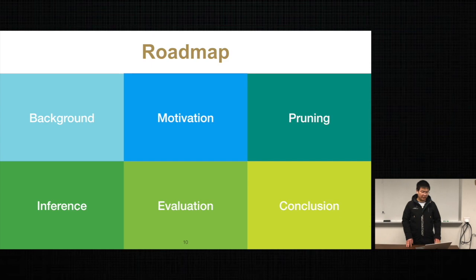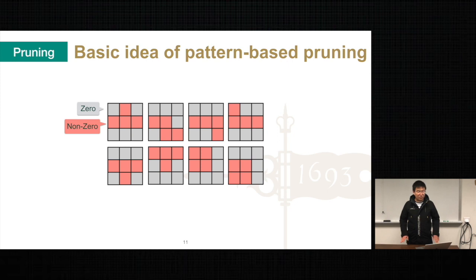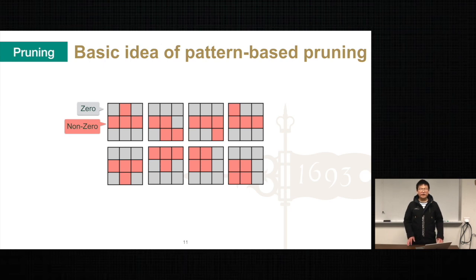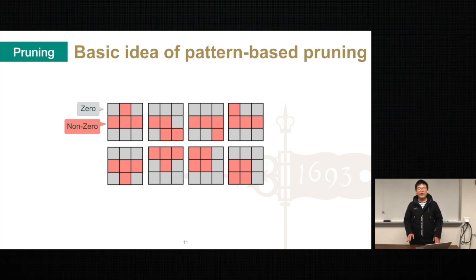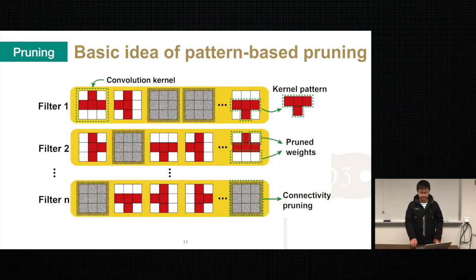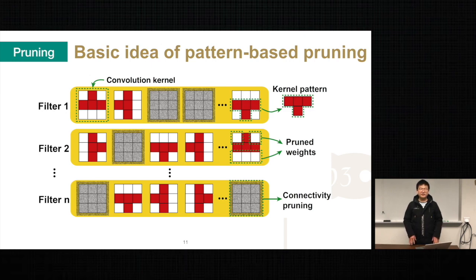Let's look at our first contribution. We call our pruning technique pattern-based pruning because we set several fixed patterns during weight pruning. Here are some sample patterns for a 3x3 convolutional kernel. At the beginning, a kernel consists of 3x3, which is 9 elements. After pruning, each kernel will have four non-zeros in a certain pattern. Our pattern-based pruning has two dimensions: one is intra-convolutional kernel pattern pruning, and another is inter-convolutional kernel connectivity pruning. To get pattern sparsity, we prune a fixed number of weights in each convolutional kernel. To get connectivity sparsity, we cut the relatively unimportant connections between certain input and output channels, which is equivalent to the removal of corresponding kernels.